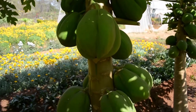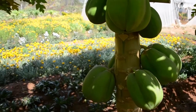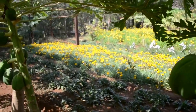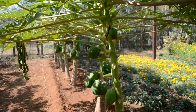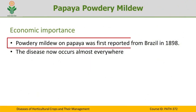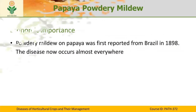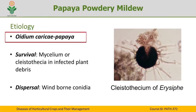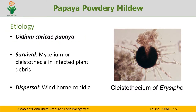As it affects the foliage, it may lead to premature defoliation. When fruits are infected, the quality and market value of the fruit is completely reduced. This disease known as powdery mildew was first reported from Brazil in 1898, and since then has been reported from different papaya-growing areas of the world. The disease is caused by an ascomycetous fungus known as Oidium caricae papayae.